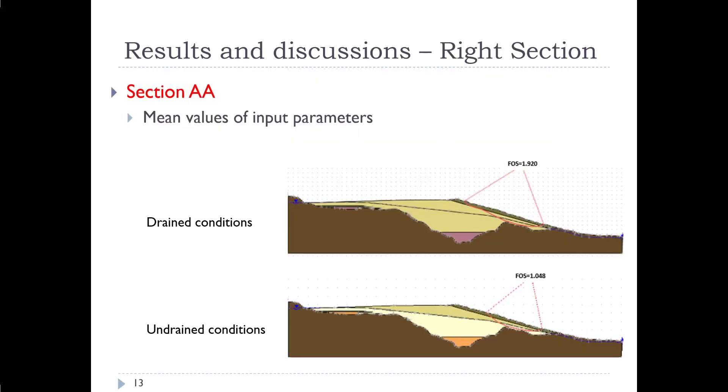If we look now and we transition over to section AA, we're looking at just using the mean value of the input parameters. If we put in for drained conditions, we get a factor of safety of 1.9. And if we look at undrained conditions, we have a factor of safety of about 1.048, so approximately 1 even.